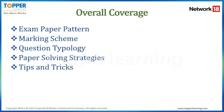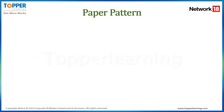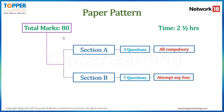Let's quickly go through the exam paper pattern — the overall structure of the paper. Your paper is going to be of total 80 marks and you'll be allotted 2 and a half hours to solve it. These 80 marks are further divided into two sections: Section A and Section B. Section A consists of 3 questions, all of which are compulsory. In Section B, there are 7 questions and you only need to attempt any 4.